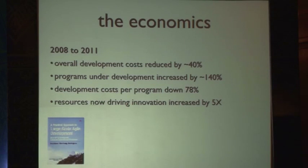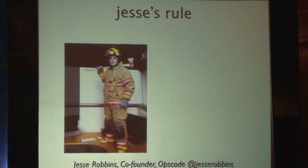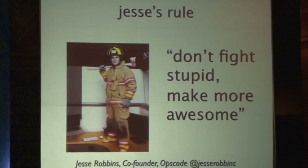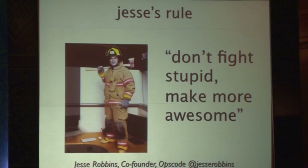This is hard and complicated to do. I want to leave you with one final thought from Jesse Robbins, who is head of availability at Amazon. The way you implement this is not by creating a program or a project — it's by everybody every day working to continuously improve their process. Jesse's rule is: don't fight stupid, make more awesome. Every day, think about one thing you can do today to make things slightly better for everyone around you. If everybody does that every day, that's how we continuously improve our process and create better outcomes for the business.